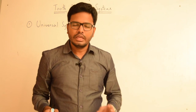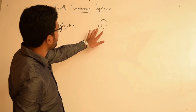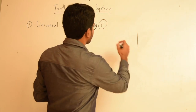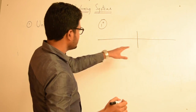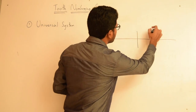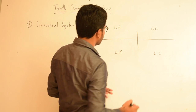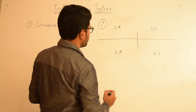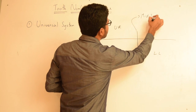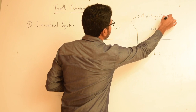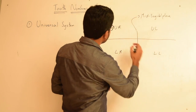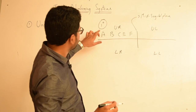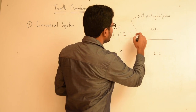Let's see how primary dentition is represented in the Universal Numbering System. Assume this as a mid-sagittal plane, and then we have four quadrants: upper right or first quadrant, upper left, lower left, and lower right quadrants. For representing deciduous teeth, we use alphabets in uppercase — that's very important. Each quadrant has five teeth, so we'll start with the first quadrant at the distal-most tooth and then continue in a clockwise direction.